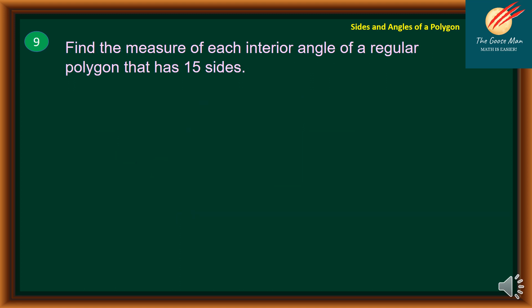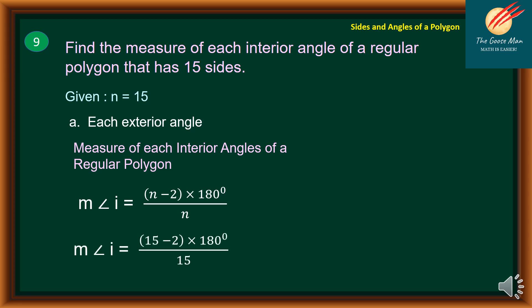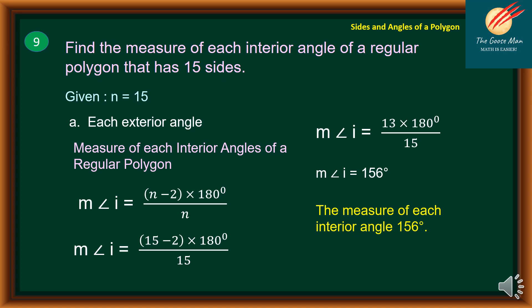Problem number 9: find the measure of each interior angle of a regular polygon that has 15 sides. N equals 15. Using the formula (N − 2) × 180 divided by N, we substitute to get (15 − 2) × 180 divided by 15, which is 13 × 180 divided by 15. Each interior angle equals 156 degrees.